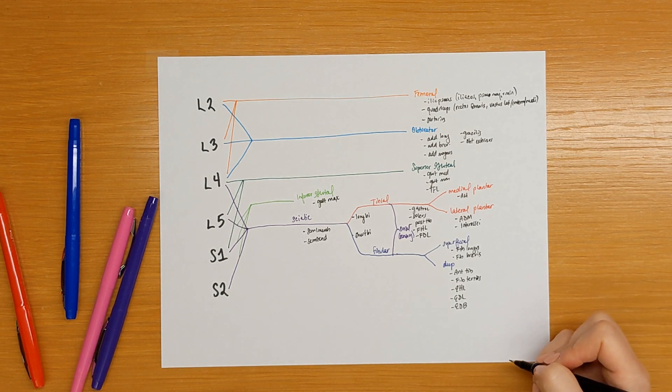And there you go. This is the advanced peripheral neuroanatomy of the leg.